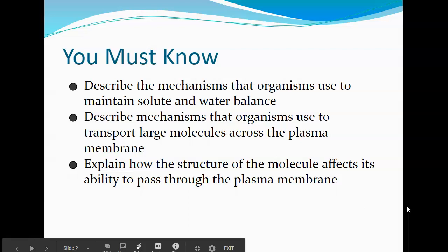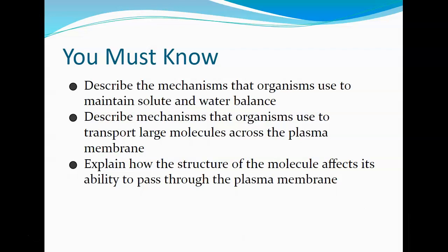Things you're going to have to know: cells want to maintain homeostasis. To do this, they may have to maintain their cell solute, which includes things like salts and water balance. We're going to talk about how they do that, how they move big things across the plasma membrane, and how the structure of things trying to pass through affects their ability to move across the membrane.